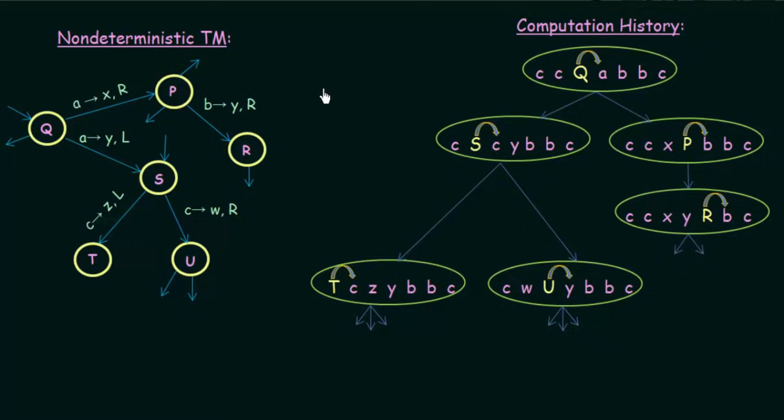We see that in the non-deterministic Turing Machine the computation history is not a linear chain anymore but a tree, because even for a single input there are many possibilities. This is how the computational history for non-deterministic Turing Machines looks, and this helps us understand the way non-deterministic Turing Machines actually work.